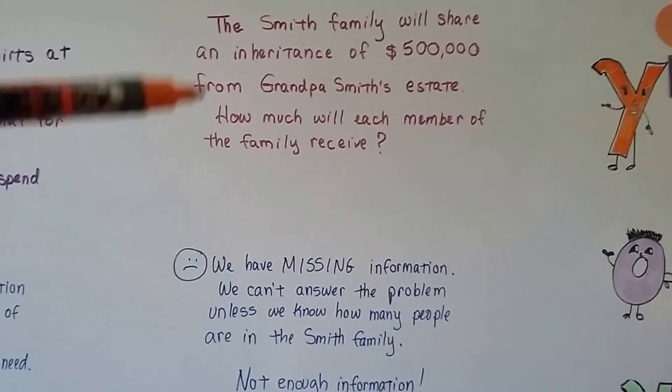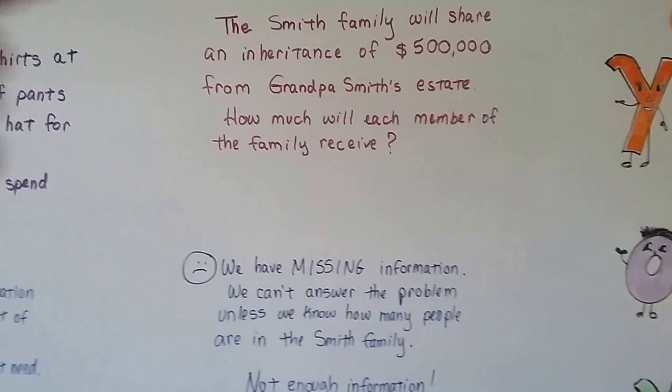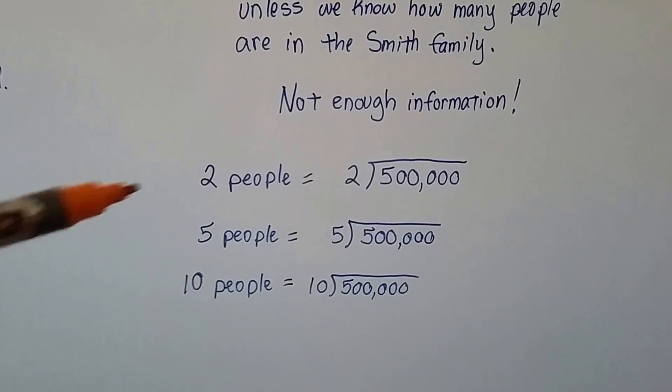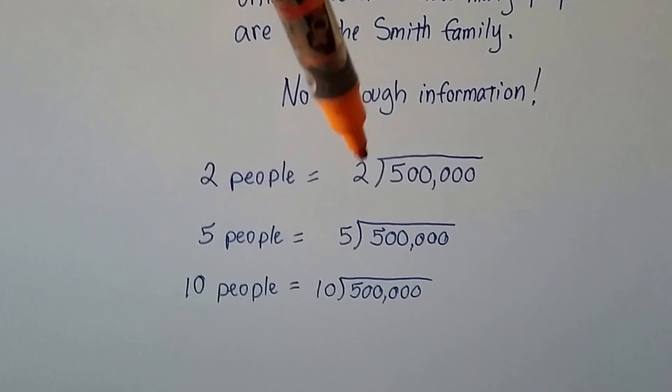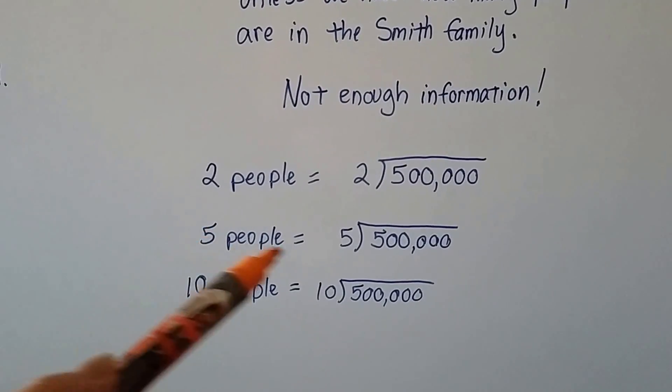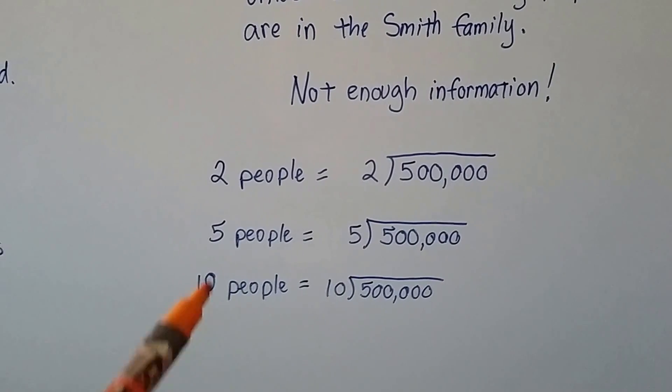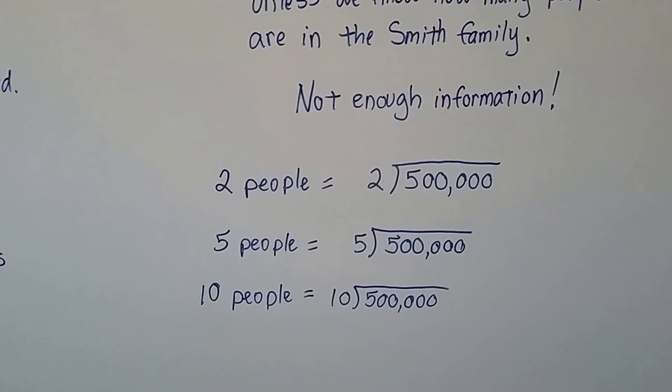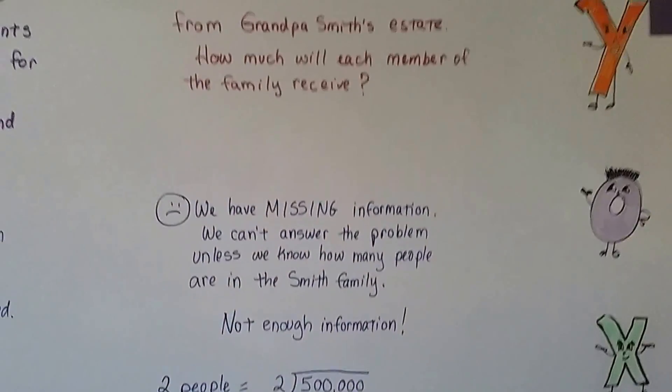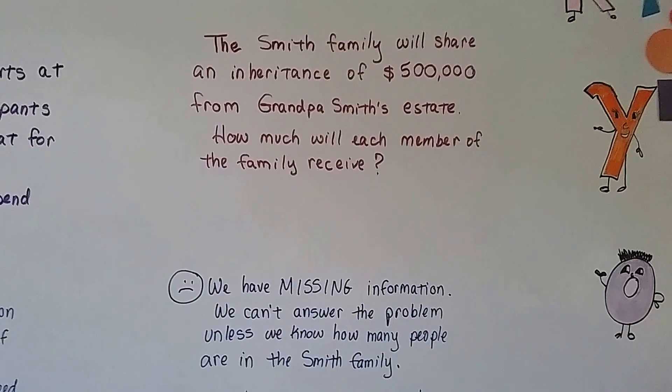If we knew how many people were in the family, we could divide the $500,000 to find out how much each one gets. If there's two people, we'd divide it by two - that would be $250,000. If there's five people in the family, they'd each get $100,000. If there's 10 people, they'd each get $50,000. But it doesn't tell us. We have no idea. So we can't answer this problem. We can't solve it.